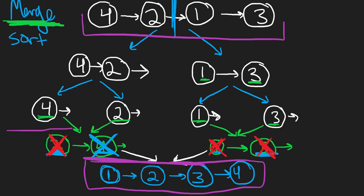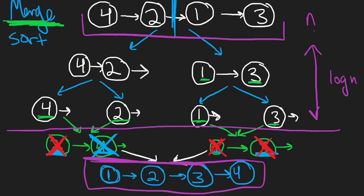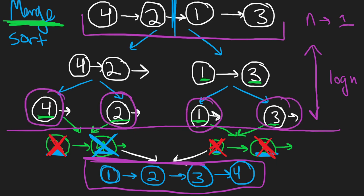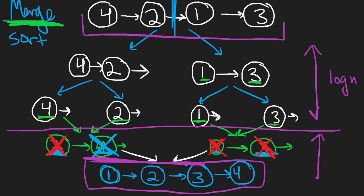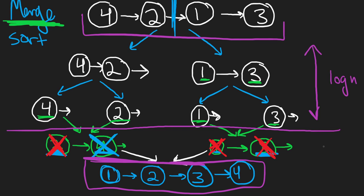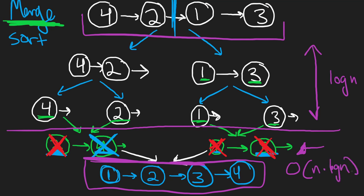So if you wanted to analyze the time complexity, look at the splitting part — the number of times we had to split our list was O(log n), because if you take a number n, how many times do you have to divide it by two to get to the base case where each node is separated? That's mathematically log n. So the number of merge steps is also log n. And we know that merging two already-sorted lists is an O(n) operation. Multiply the two and you get O(n log n), which is the overall time complexity.